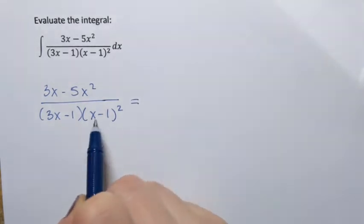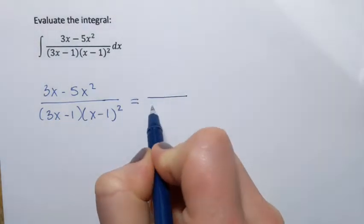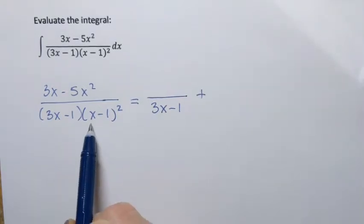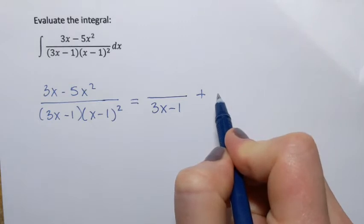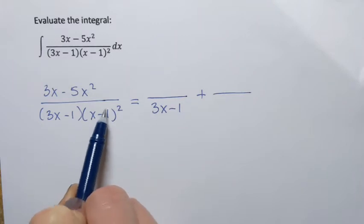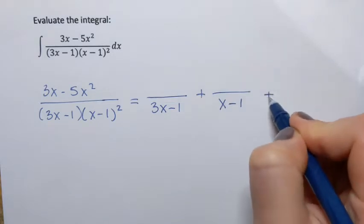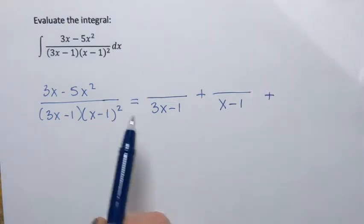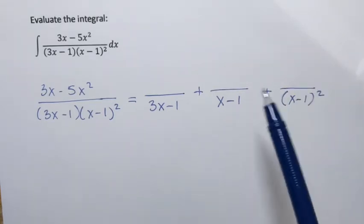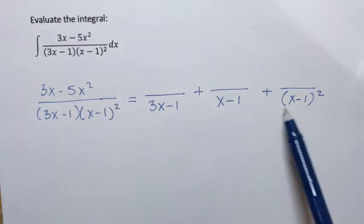This is how we're going to decompose this expression. Each linear factor is going to have its own fraction. So 3x minus 1 gets its own fraction, and for the repeated factor we're going to have several fractions — one fraction for (x minus 1) to the first power, and another for (x minus 1) to the second power. The rule is to go from power 1 up to the highest power, which in this case is power 2.